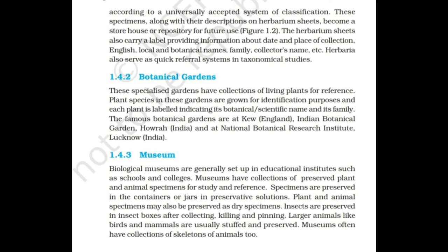Botanical gardens are specialized gardens with collections of living plants for reference. Plant species in these gardens are grown for identification purposes, and each plant is labelled indicating its botanical or scientific name and its family. Famous botanical gardens are at Kew in England, the Indian Botanical Garden in Howrah, India, and the National Botanical Research Institute in Lucknow, India.